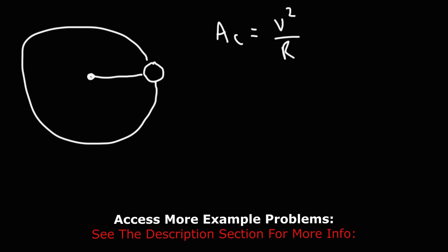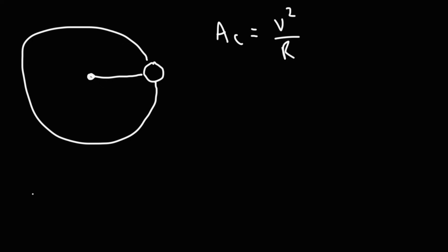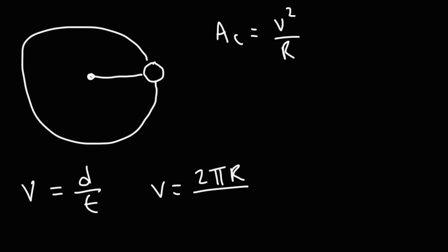Let's talk about how we can calculate the velocity for an object moving in uniform circular motion. We know that velocity is displacement over time. The distance that the object travels in a circle is going to be the circumference, which is 2π times the radius. The time it takes for the object to make one complete revolution around a circle is known as the period, capital T. Both lowercase t and capital T are measured in units of time, like seconds, minutes, or hours.